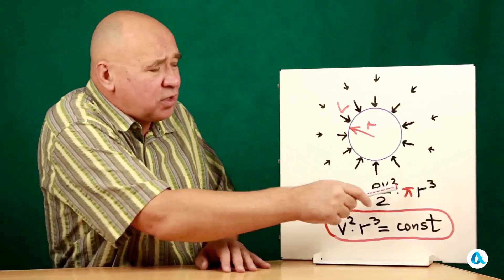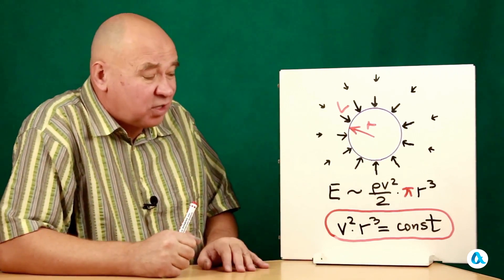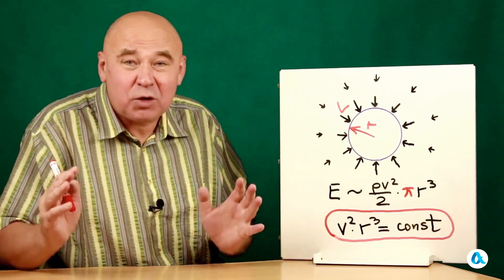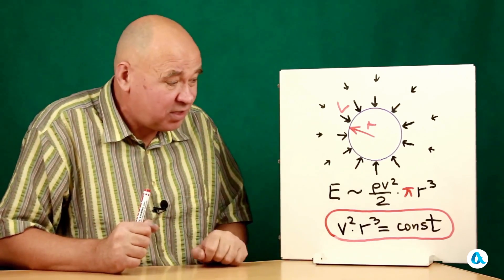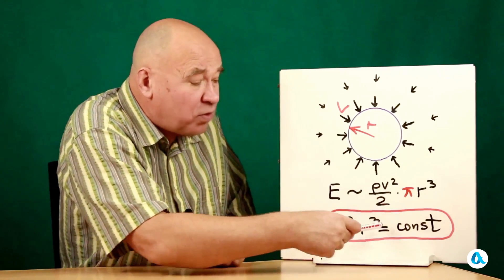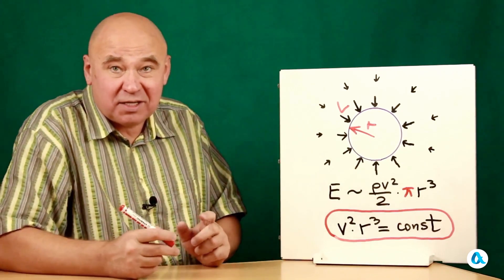But neither π nor a 2, they're not essential for us, but what's essential is that if the liquid is perfect then the energy will be preserved with such compression. And that signifies that the product obtained by squaring v and cubing r will remain constant throughout the process.